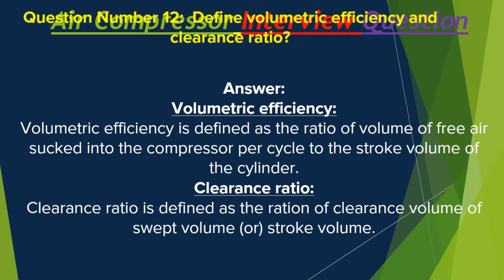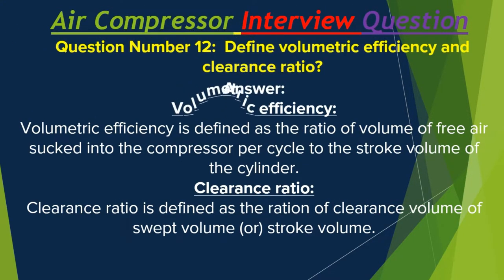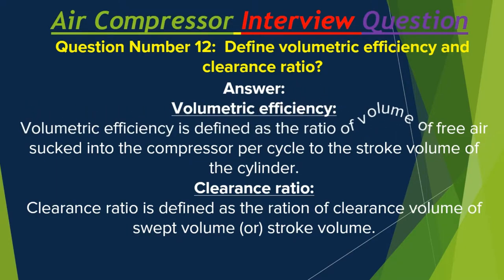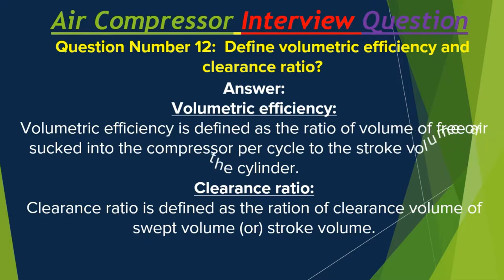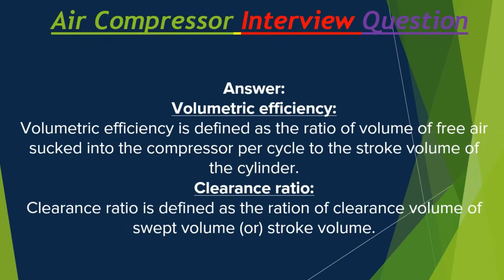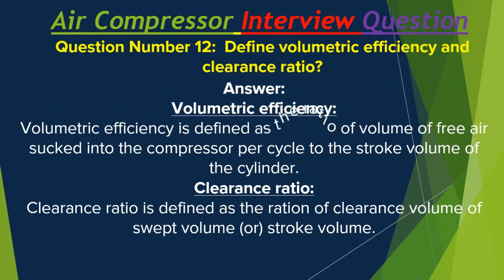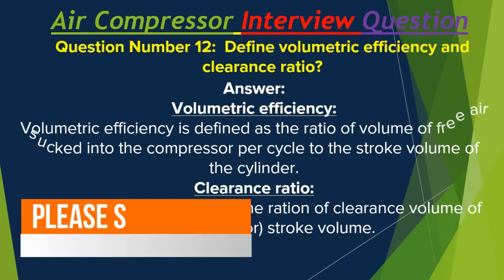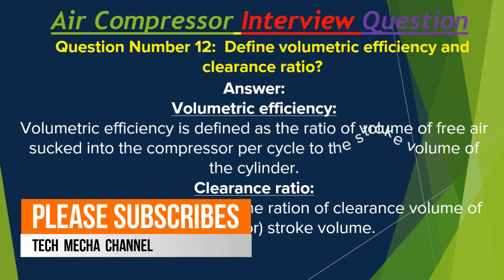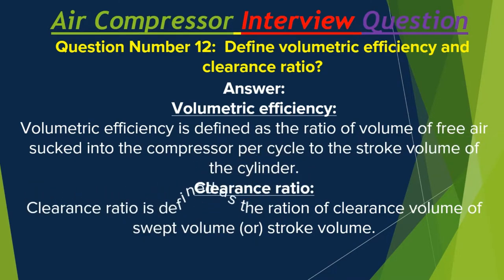Question number 12: Define volumetric efficiency and clearance ratio. Volumetric efficiency is defined as the ratio of volume of free air sucked into the compressor per cycle to the stroke volume of the cylinder. Clearance ratio is defined as the ratio of clearance volume to swept volume or stroke volume.